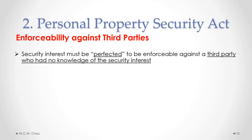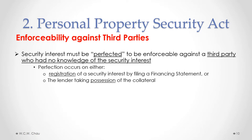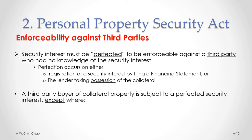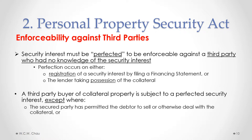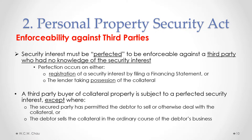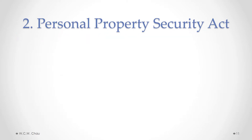Under the Personal Property Security Act, the issue of enforceability against third parties is dealt with by having the security interest perfected in order to be enforceable against a third party who had no knowledge of the security interest. The security interest must be perfected in order to enforce it against a third party who was not aware of the security interest over the asset. Perfection means that the security interest has been registered in the PPSA registry by filing a document called a financing statement. A third party buyer of collateral property is subject to a perfected security interest, except where the secured party has permitted the debtor to sell or otherwise deal.